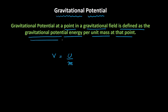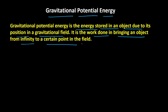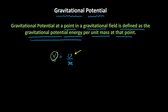Where U is the gravitational potential energy, M is the mass, and V is the gravitational potential. In order to understand gravitational potential, we first need to find the value of gravitational potential energy. So let us find an expression for gravitational potential energy, and we will put that expression in place of U to get the value of gravitational potential.